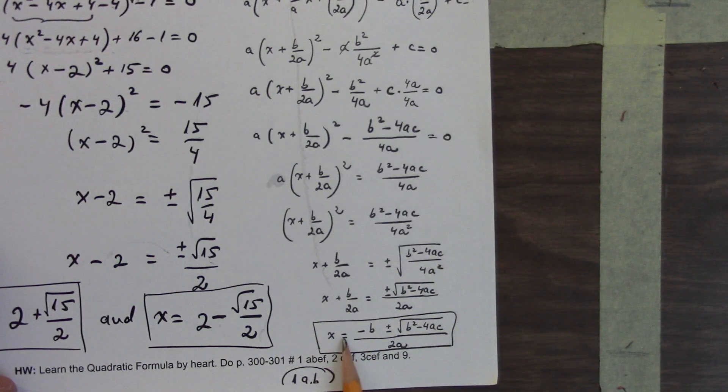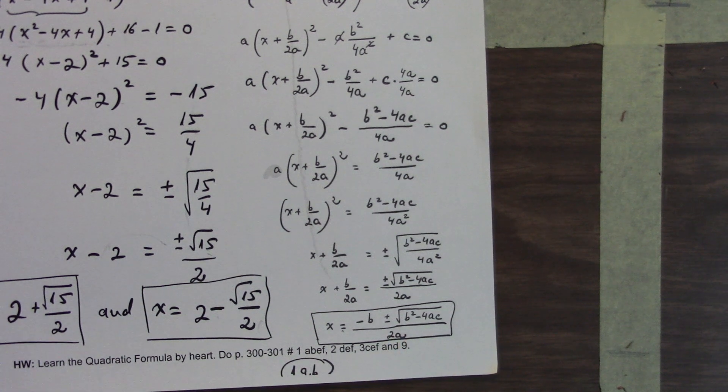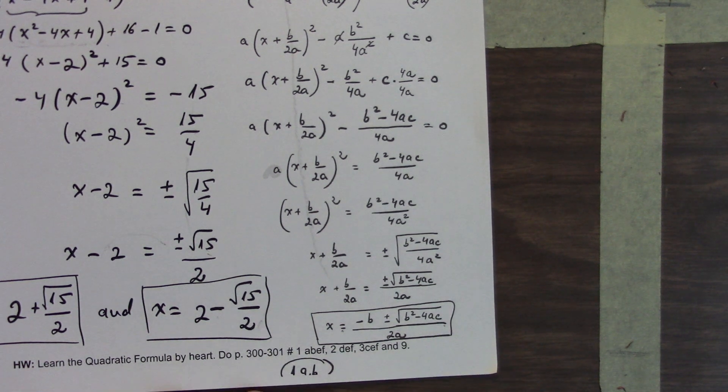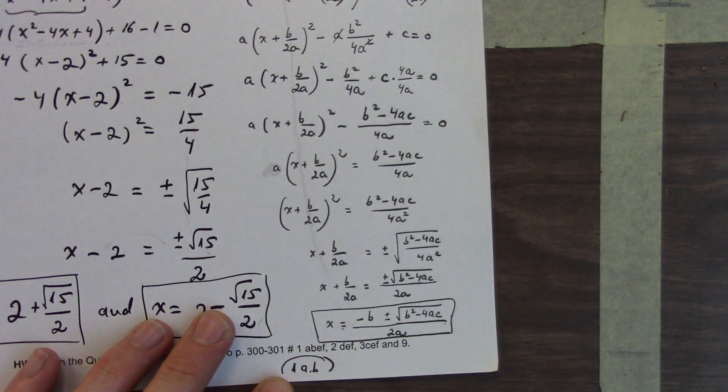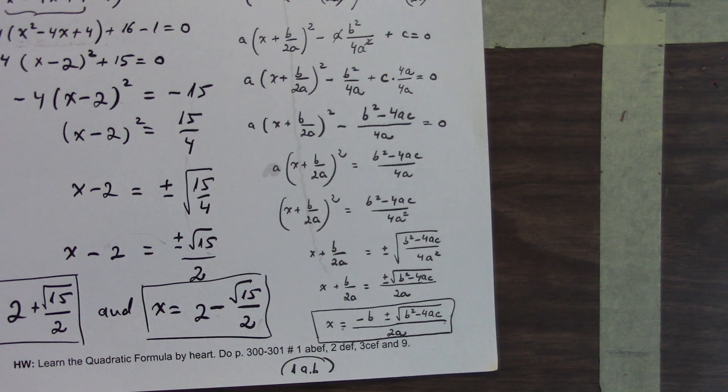Now if we were to do that exact same process, but we've replaced the numbers with the variables a, b, and c, we can rewrite the standard form in vertex form by just using the same letters a, b, and c instead of actual numbers. If we do all that, we end up with this very long formula. It's exact same as this example. We've just left a, b, and c in there.